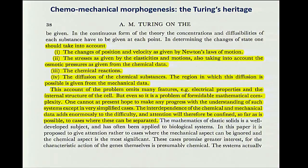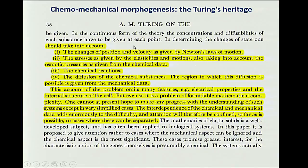If we read Turing's papers in detail, Turing had hinted at this much earlier. He said that if we want to model morphogenetic processes, we have to take into account Newton's laws of motion, the stresses, the chemical reactions, and the chemical substances. But as Turing said, this is a problem of formidable mathematical complexity. So he only focused on the chemical part, but clearly stated that the chemo-mechanical basis of morphogenesis had to be studied. That is what I will give you a brief overview of now.